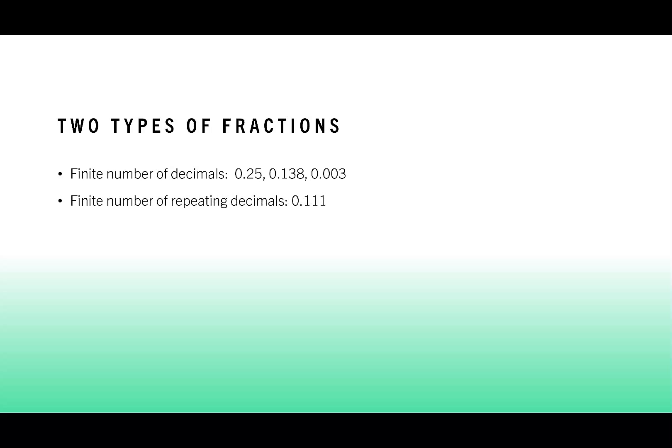And then numbers that have a finite number of repeating decimals, like 0.111 that continues, 0.454545 that continues, or 0.782782782. So we'll break these apart and look at them individually.